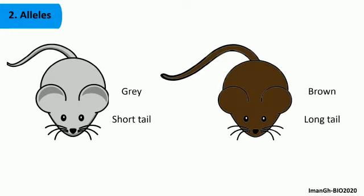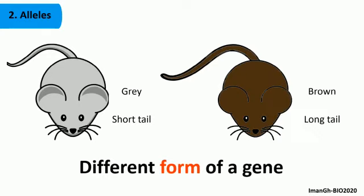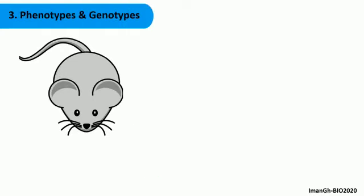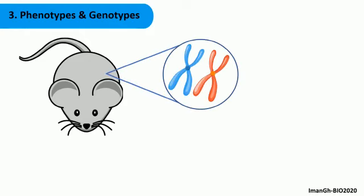Therefore, genes exist in different forms. Each form is called an allele. For every gene coding for a certain characteristic, an individual has two alleles, one from each parent.